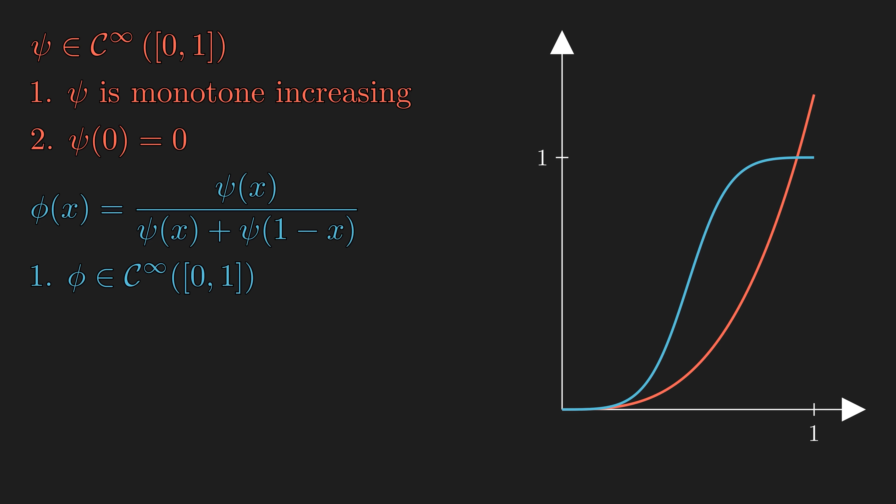The first property states that the phi is also smooth from the closed interval 0 to 1. And the second property says that phi of 0 equals 0, and phi of 1 is equal to 1. And the third property says that the phi is monotone increasing. The next two properties are the most important, and they will be revealed after the first three properties are proved, so please stay tuned.